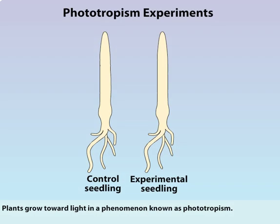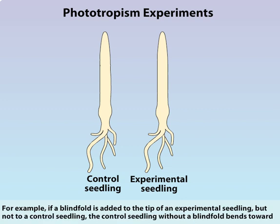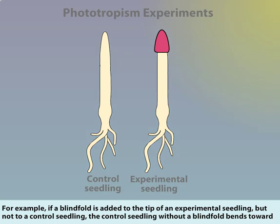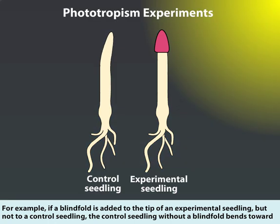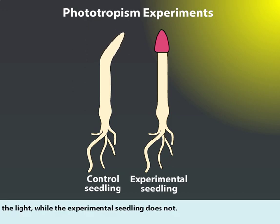Plants grow toward light in a phenomenon known as phototropism. Experiments with blindfolds can determine the light-sensitive region. For example, if a blindfold is added to the tip of an experimental seedling but not to a control seedling, the control seedling without a blindfold bends toward the light, while the experimental seedling does not.